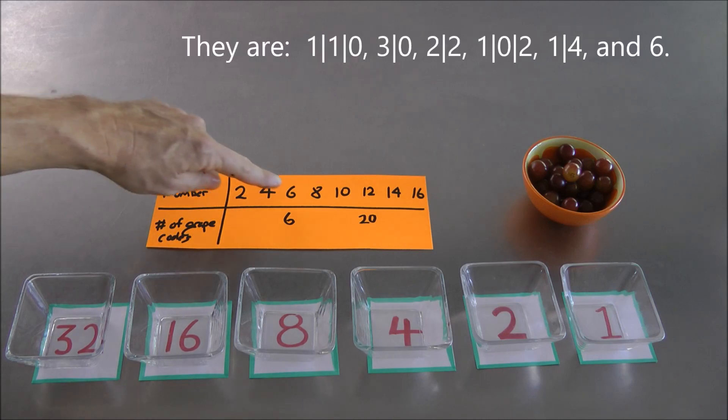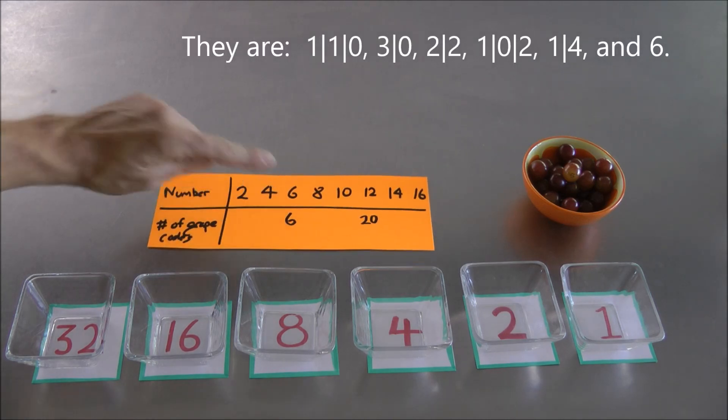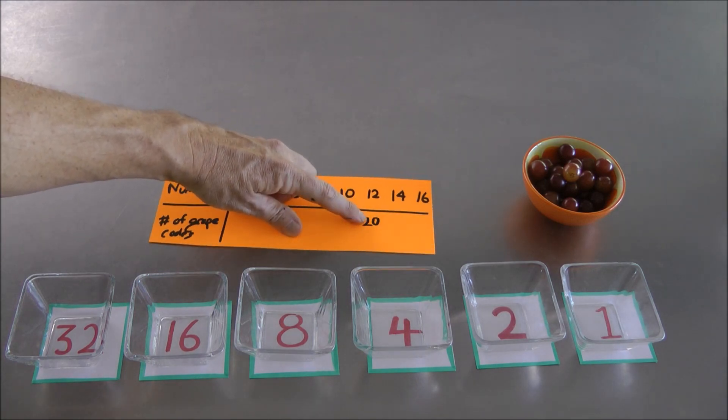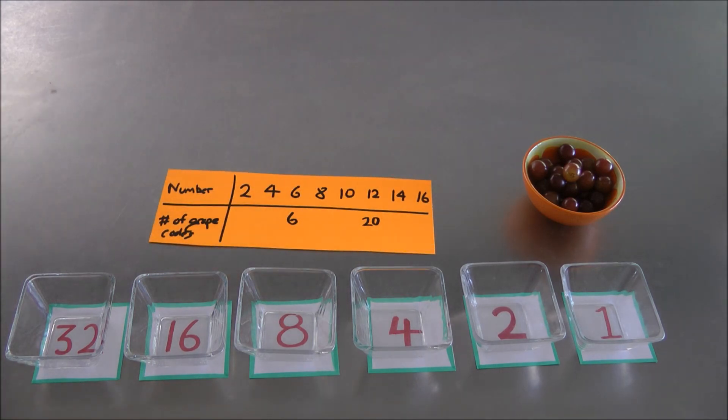For example, we did see there are actually six different grape codes for the number six. And I did show you in my calculations on paper that there are actually 20 different representations of the number 12 in terms of grapes.